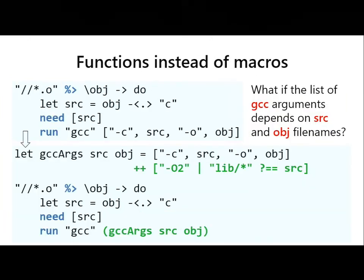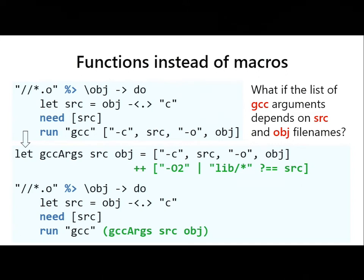We would like to modify our simple build rule to change the command line for particular source files — for example, passing the optimization flag dash-O2 if we're compiling a source file that lives in the lib subdirectory. It's very hard to do this in make in a maintainable way. But in Haskell we can just use functions. We refactor so we don't use a hardcoded command line, instead putting it inside a function 'gccArguments' with source and object file parameters. It checks whether the source file matches a pattern in the lib subdirectory, and if so adds the extra flag. It's very easy to do in Haskell.